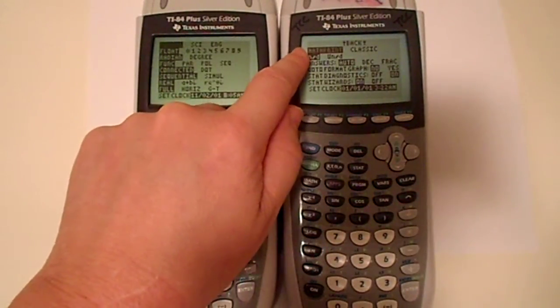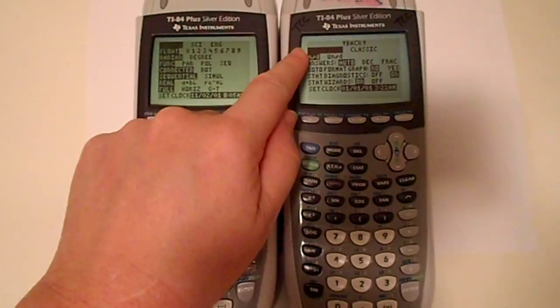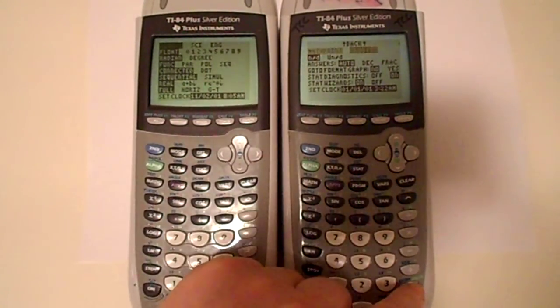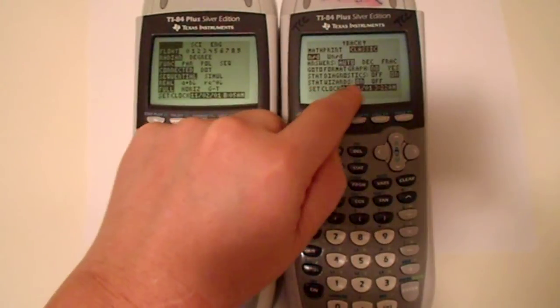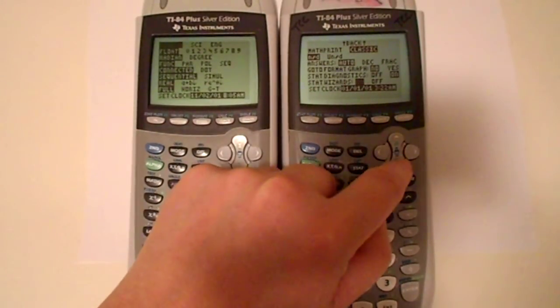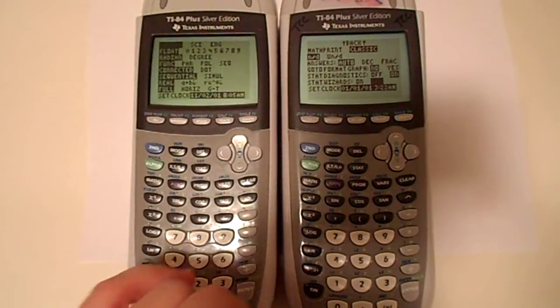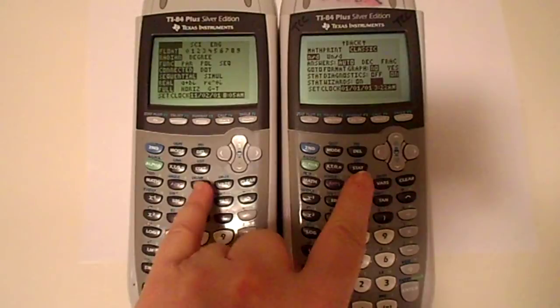The calculator on the right has some software for math print. If we change this back to classic mode and if we come down to stat wizards and turn stat wizards off then we should have the same screens when we do our descriptive statistics.